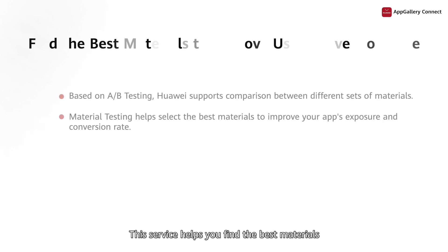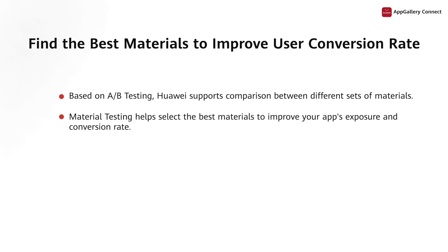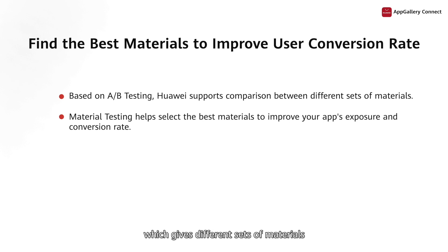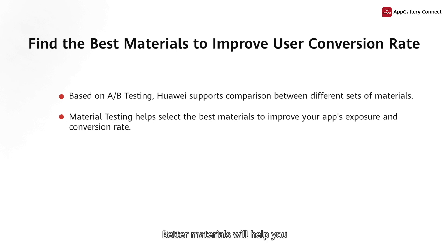This service helps you find the best materials to help boost the user conversion rate. Material testing is based on A-B testing, which gives different sets of materials to different experiment groups for responsiveness and helps you find the best set accordingly. Better materials will help you improve your app's exposure and conversion rate.